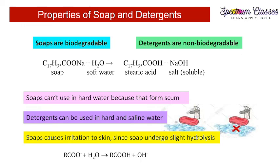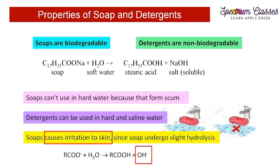Soaps cause irritation to the skin because they undergo slight hydrolysis. The reaction can be shown as: RCOO⁻ reacting with water undergoes slight hydrolysis and forms the acid, and the free OH⁻ causes irritation to the skin. This concludes our discussion on soaps and detergents.